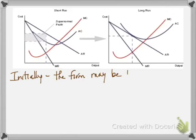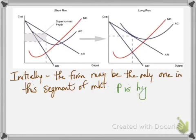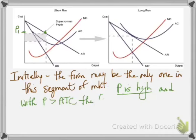Let's look at how that works graphically. The graph on the left is emphasizing the short run so initially the firm may be the only one in this segment of the market so they introduce a new product.